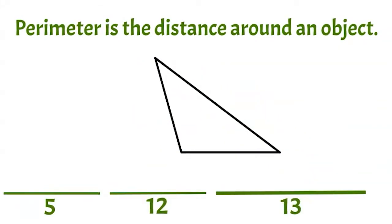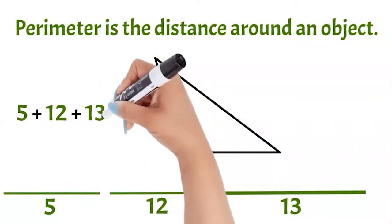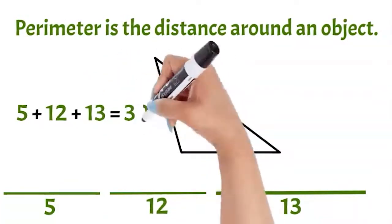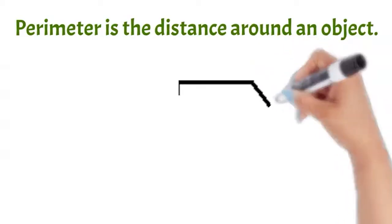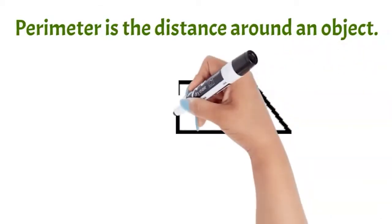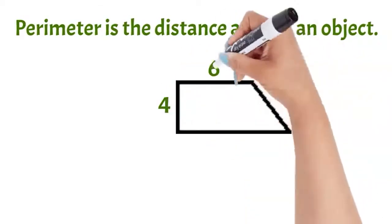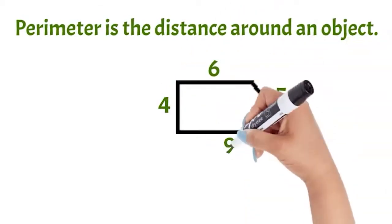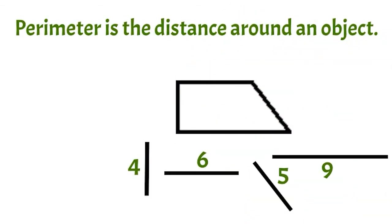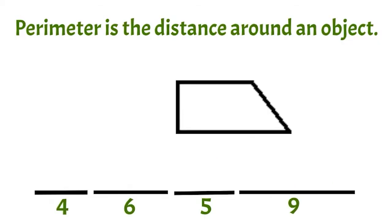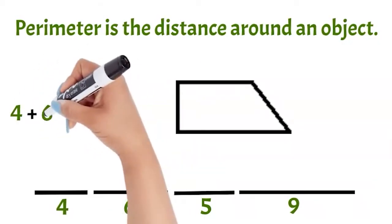5 plus 12 plus 13 equals 30. This triangle has a perimeter of 30 units. To find the perimeter of a quadrilateral, you would add up the lengths of all four sides: 4 plus 6 plus 5 plus 9.